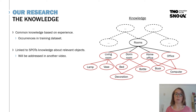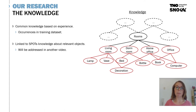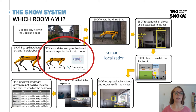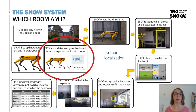A detailed explanation about how the generation of the knowledge graph works will be available in one of the other SNOW videos, as it is linked to another part of Spot's internal workings — specifically a video about WordNet, ConceptNet, and how they are combined to extend the knowledge with the relevant concepts needed to fulfill the task: 'Which room am I in in the villa?'